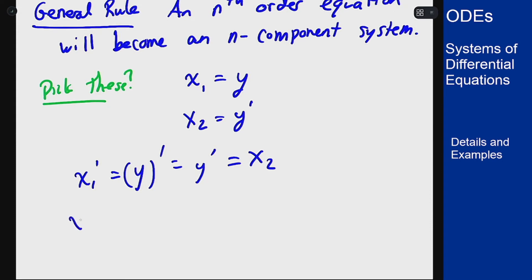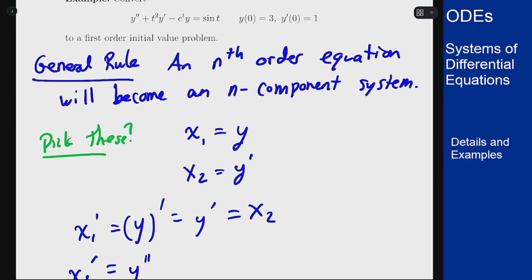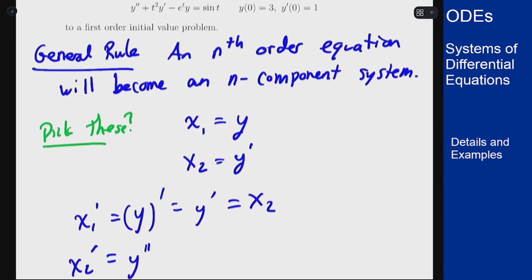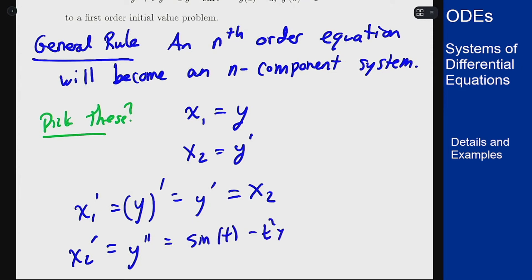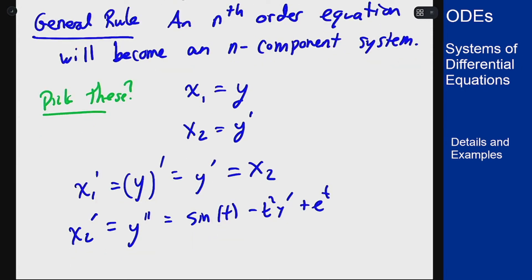Now what about x2 prime? Well, x2 prime is going to be y double prime. But now y double prime, if I look back up my equation, I can solve out for y double prime here. I can solve this out and move all the terms to the other side of the equation, and that's the point of this being a second-order equation, where you have to find equations where we can always solve out for the high-story derivative. So I can solve out for y double prime here, and get that this should be sine of t minus t squared y prime plus e to the t y. And I can convert y prime and y back into x's because of how I've defined my two variables up here.